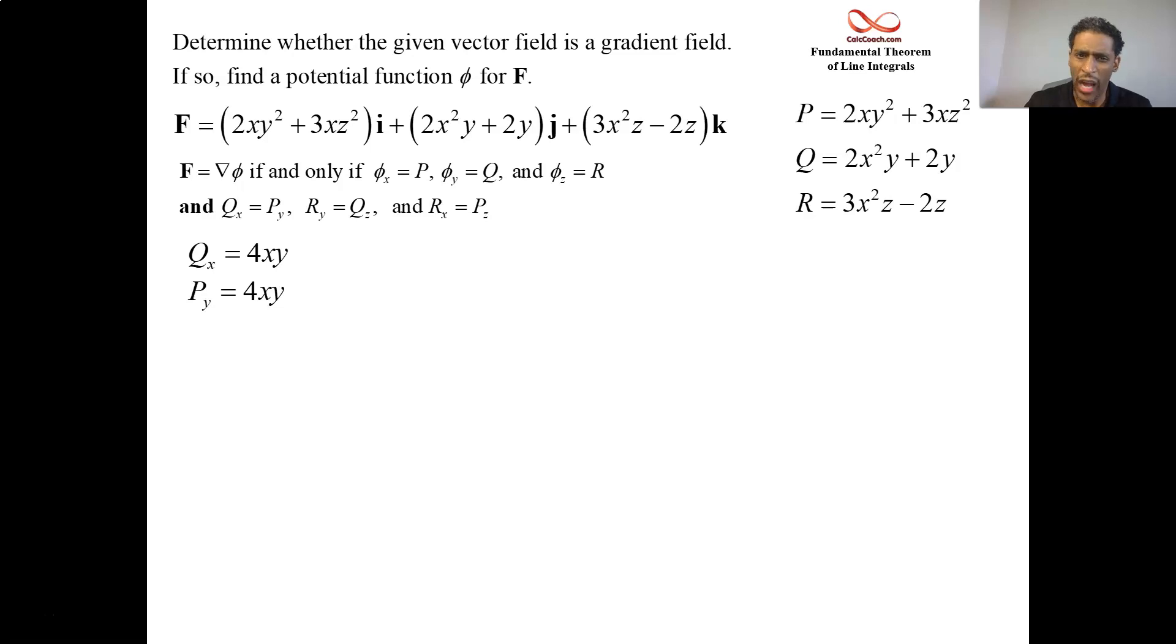Now, there are no y's in the r function, Ry is 0. There are no z's in the q function, Qz is 0. Now, Rx is 6xz, and Pz is also 6xz. So yes, it's true. There is a gradient. F is the gradient of some vector field. Now, we have f is the gradient of some scalar function.